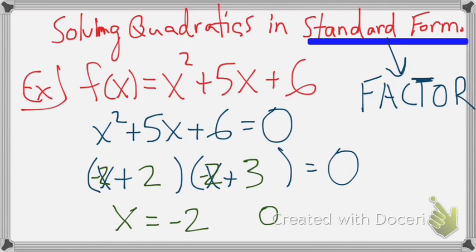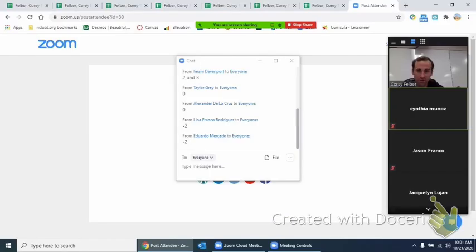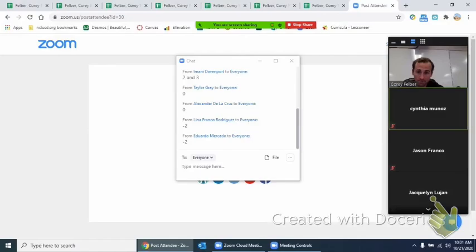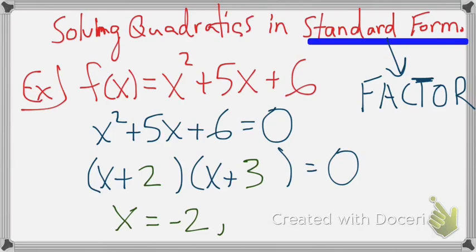What would be the other one though? What's the other, because we have two x-intercepts all the time, two solutions. What would the other one be? Look at the other parenthesis. What would make the other parenthesis 0? What could we plug in here that would make that 0? Good, just the opposite of that one.